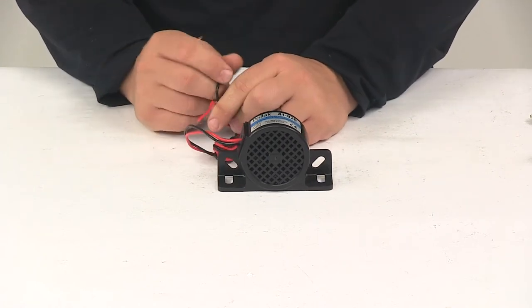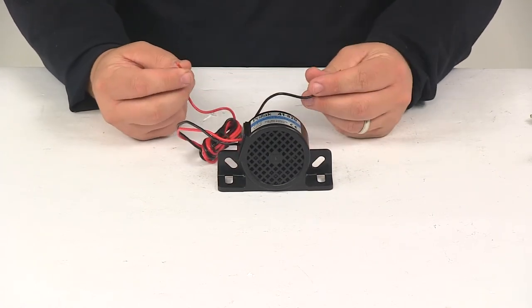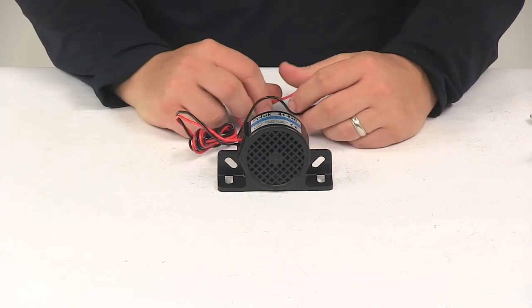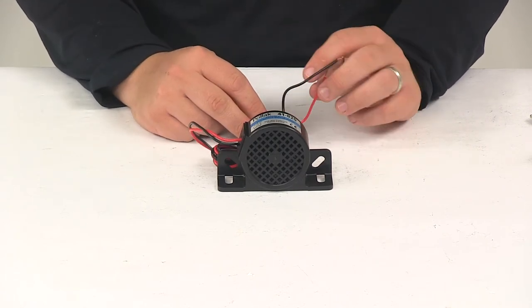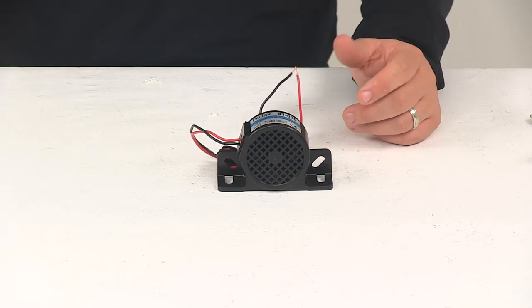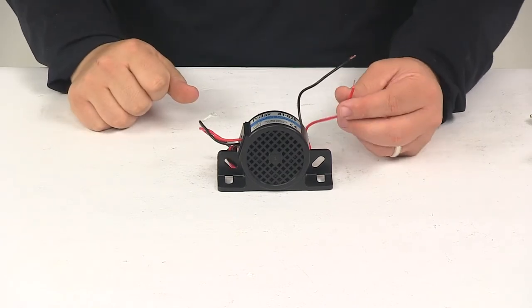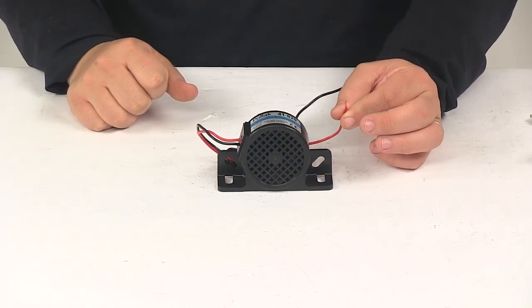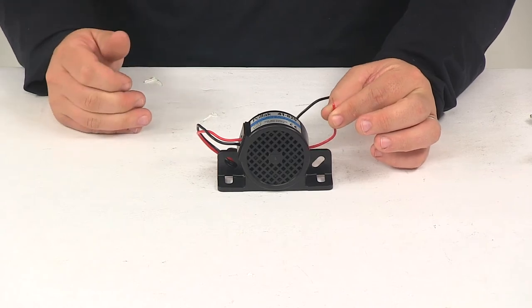It's a two-wire design. Your black wire is your ground wire. Red wire is your power wire. It comes with detailed installation instructions that will walk you through the installation process step by step. Again, it is a backup alarm, so the power wire is going to be ran off of a reverse power wire.